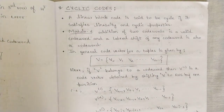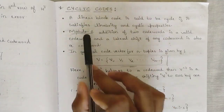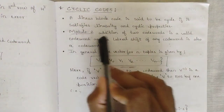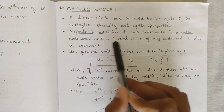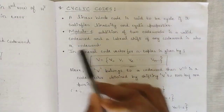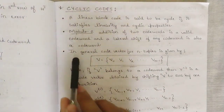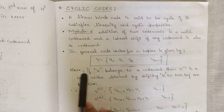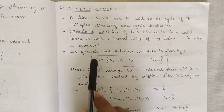Linearity is the adjacent coefficient property common for all variables. Under modulo-2 addition, the sum of two code words is a valid code word, and a lateral shift of any code word is also a code word. This is one key property of cyclic codes. In general, the code vector for n-tuples of a cyclic code is represented as vector v.